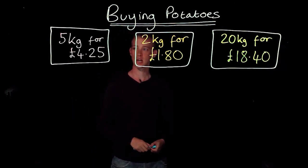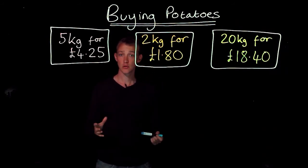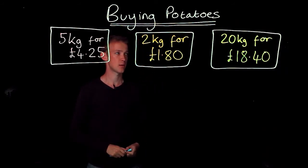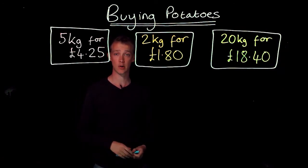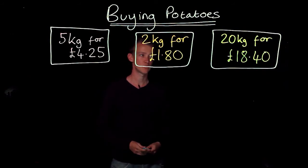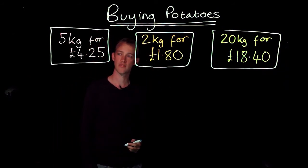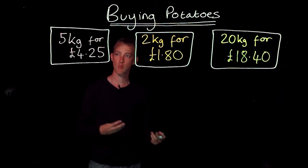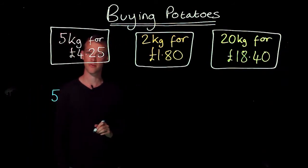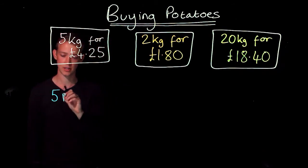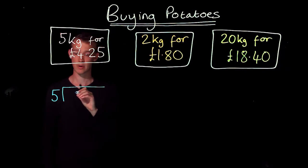Let's start with this one: five kilograms for £4.25. For each of these different price tags, I'm going to find out what's called a unit cost — I'm going to work out the cost of one kilogram so we can compare all three prices. So let's work out what one kilogram is. I'm going to divide my total cost by five, using the bus stop method to help me work out what one kilogram would cost.